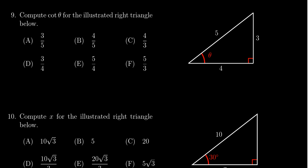We're given a right triangle diagram we see right here with respect to theta. The opposite side is three, the adjacent side is four, and the hypotenuse is five.